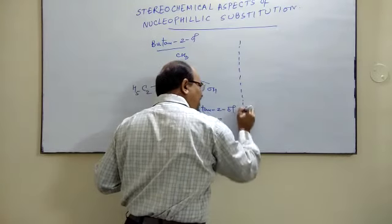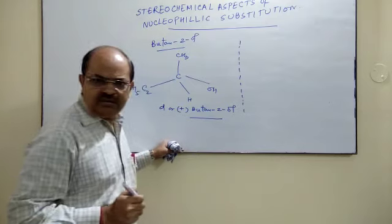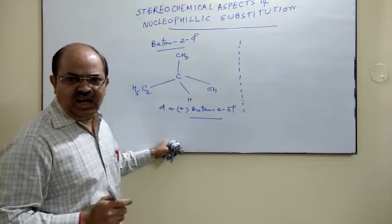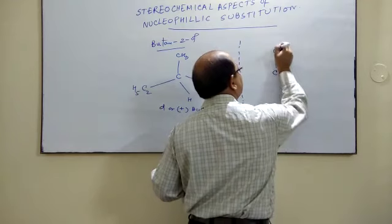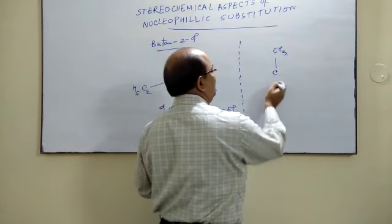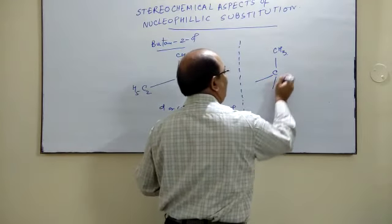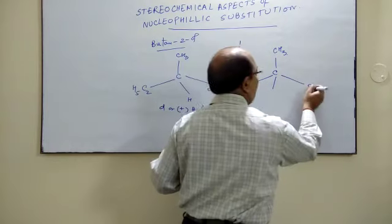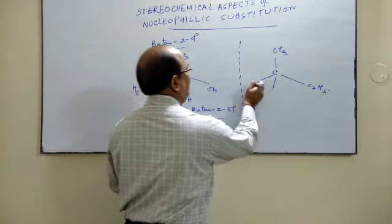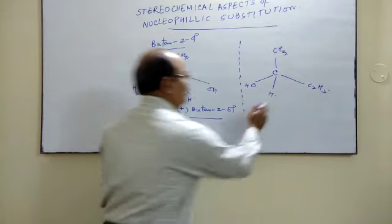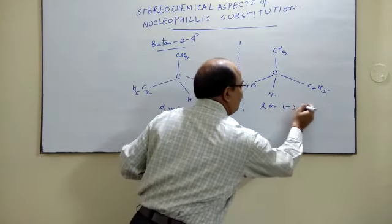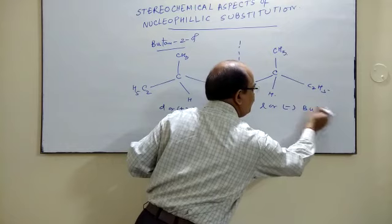Its mirror image is non-superimposable. So this is your L or minus Butan-2-ol.